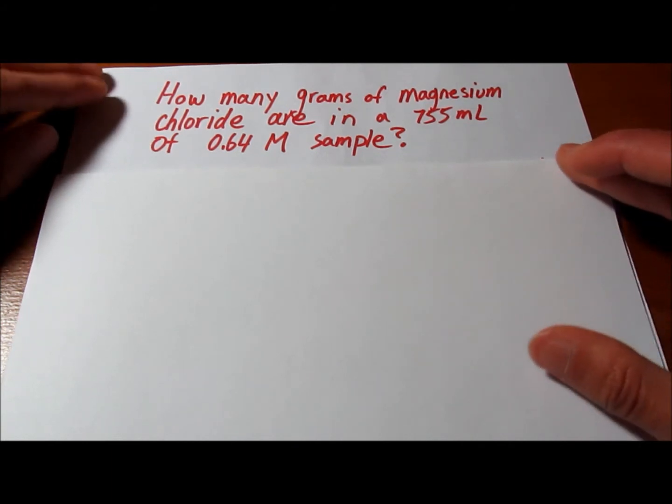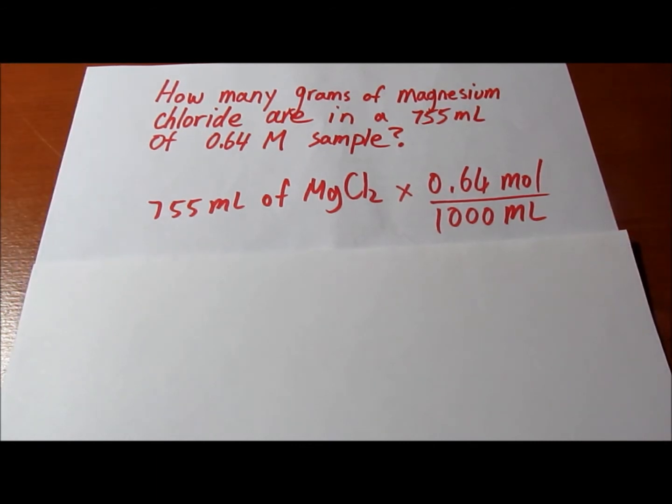We simply do this by using the volume of magnesium chloride and we would times it by 0.64 mole over 1000 milliliters. I got this whole equation from the concentration. Now remember the concentration means mole over liters.